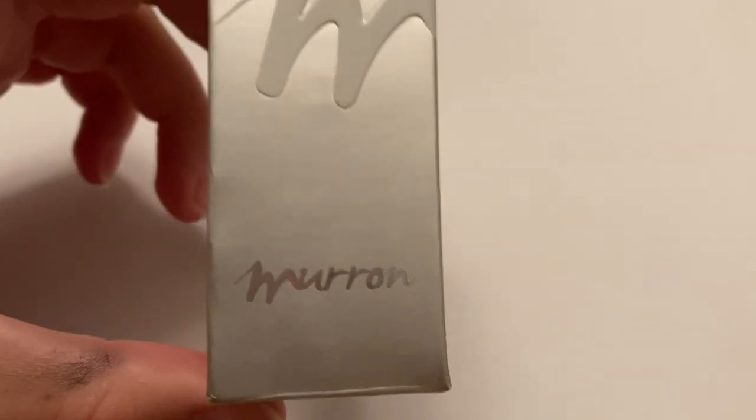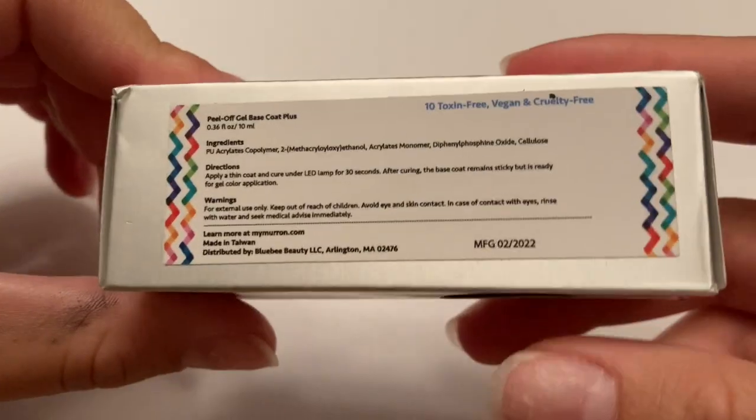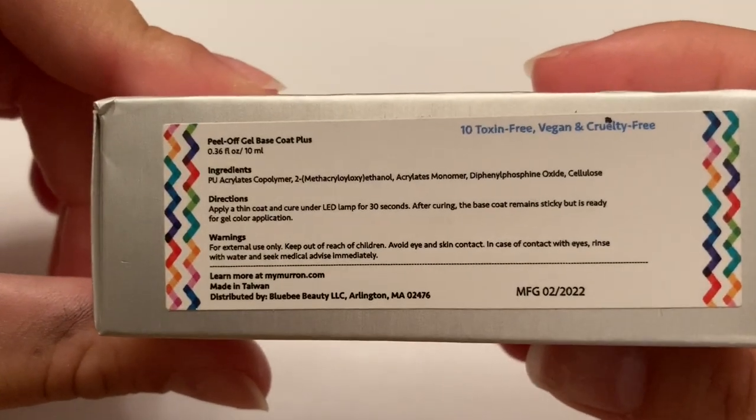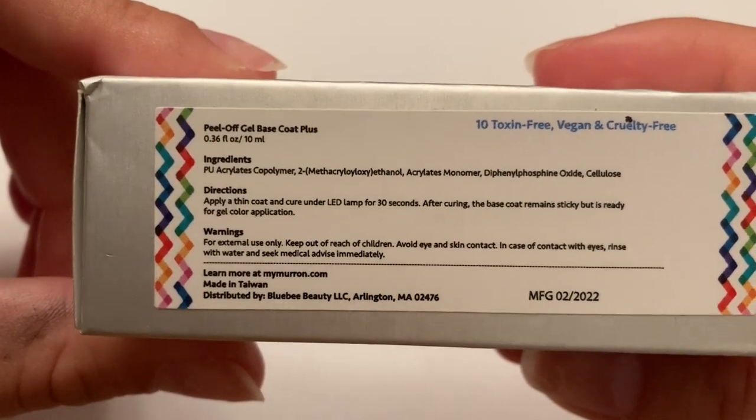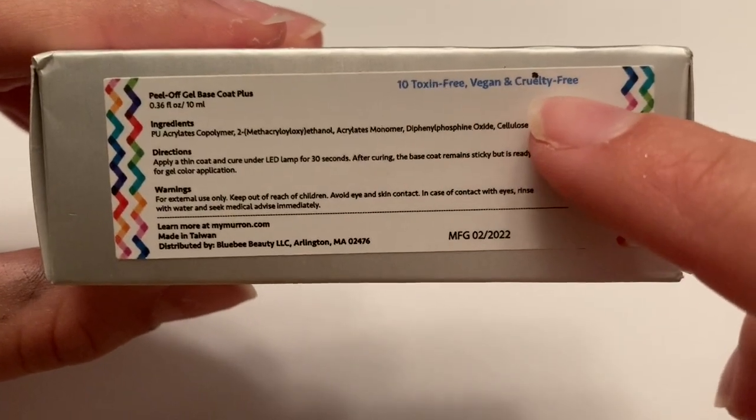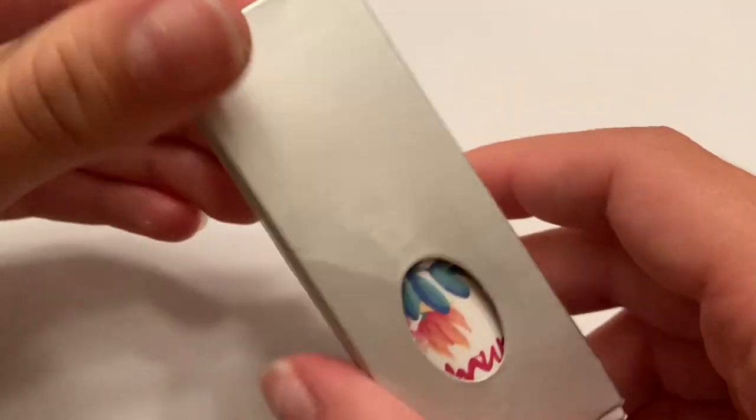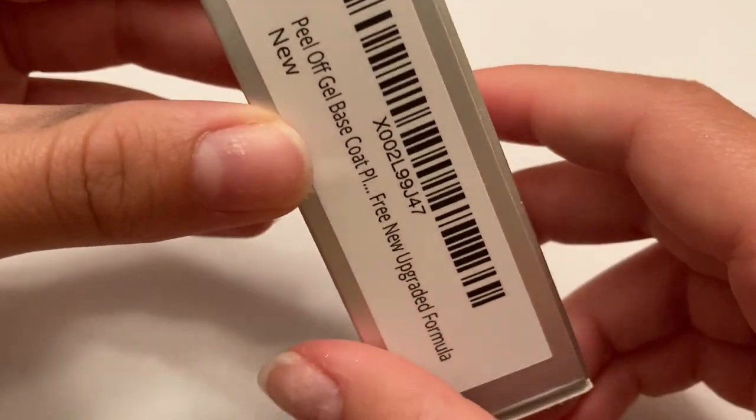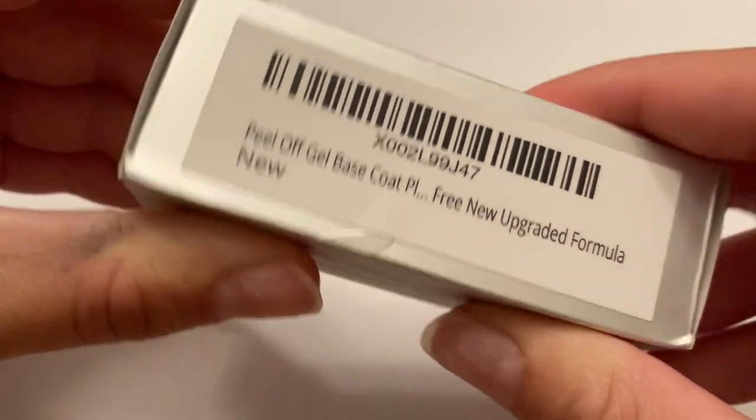And by the way, I do have dried nail glue on my nails so they're not looking amazing right now, but that will change later in the video when I do the manicure. So I got this from Amazon for around $12. I believe it's pronounced Murron, but I am not 100% sure. That is just what I'm going to be calling it throughout the video.